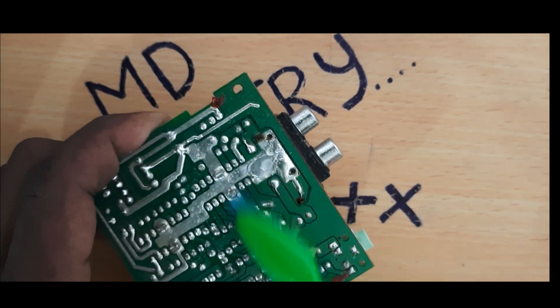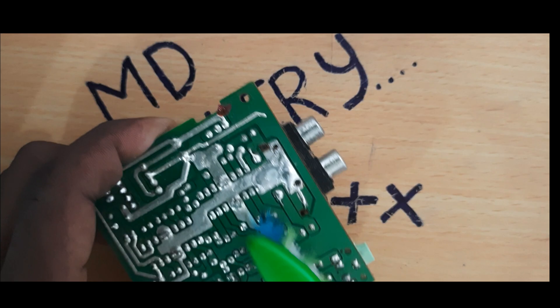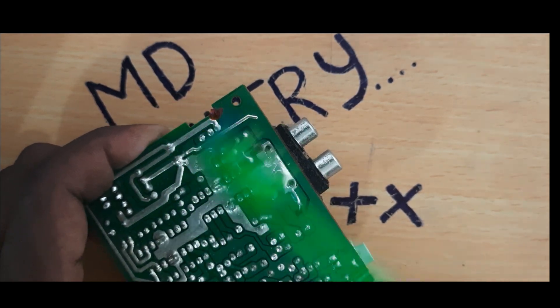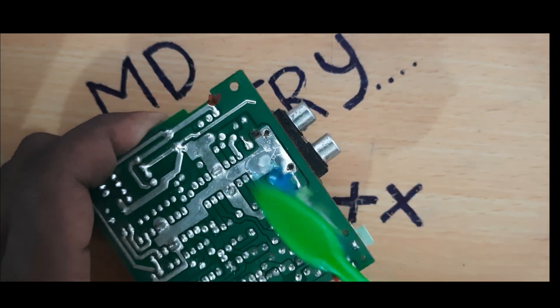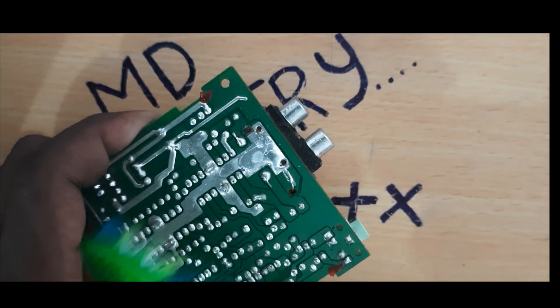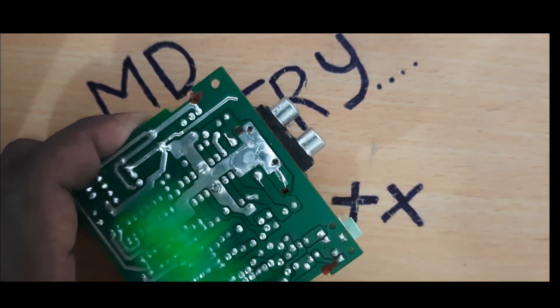After cleaning the flux using the thinner, the flux has been cleared from the board. After cleaning, cross check whether there is any excess flux on the board. If you see some flux, kindly clean the flux.